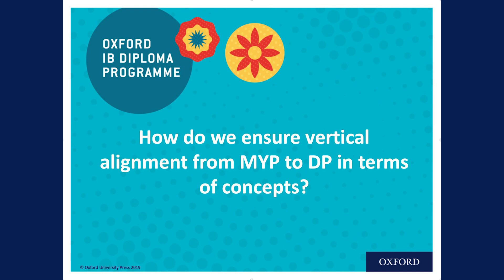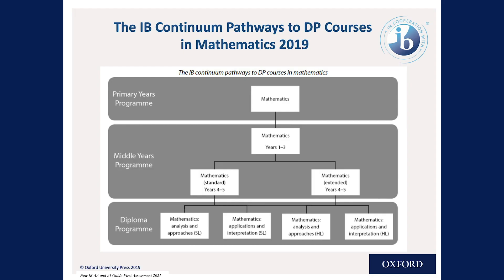Today's frequently asked question is: how do we ensure vertical alignment from MYP to DP in terms of concepts? Let's revisit the pathways that the new Diploma Mathematics courses are being offered. We have four courses — analysis and approaches offered at SL and HL, and applications and interpretations offered at SL and HL.